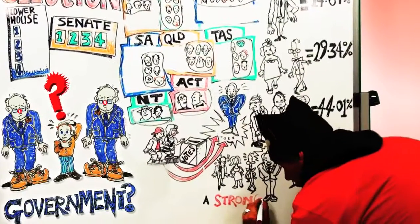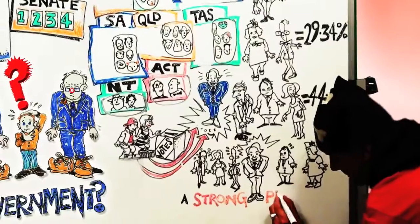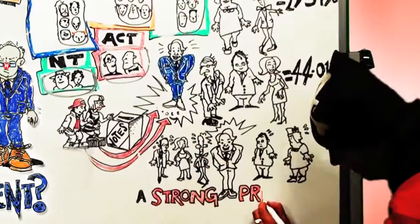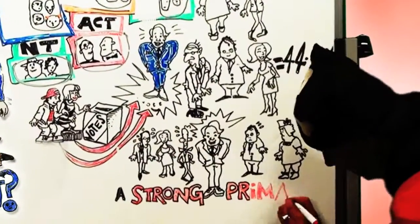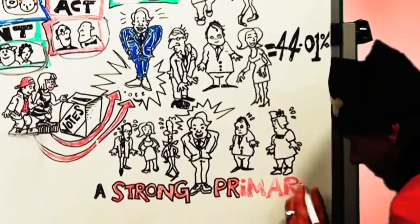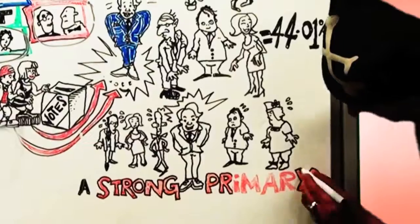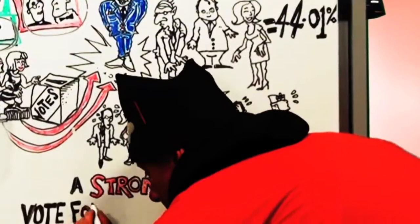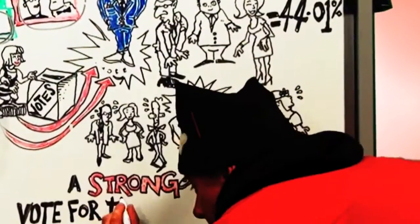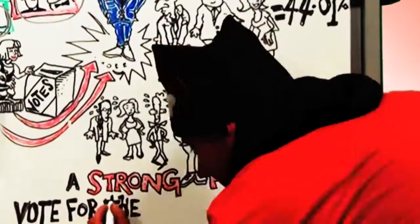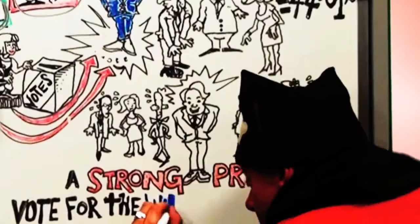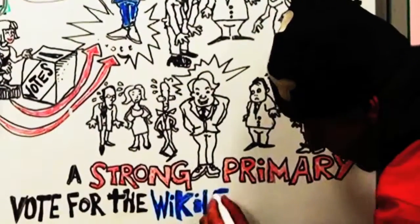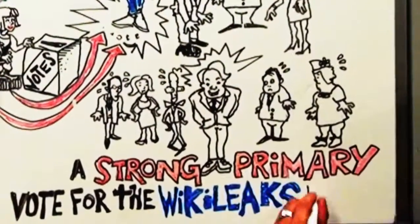This will not necessarily get the WikiLeaks Party over the line — we also need a strong primary vote, and you, dear supporters, are the only ones that can make that happen. Vote 1 the WikiLeaks Party in the Senate, and help make the Senate a House of Review, as intended.